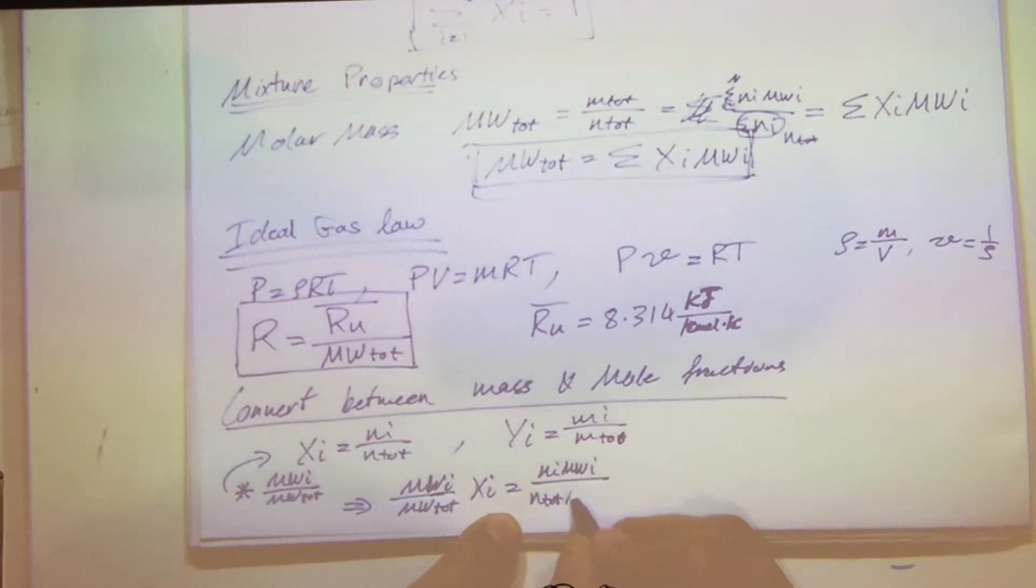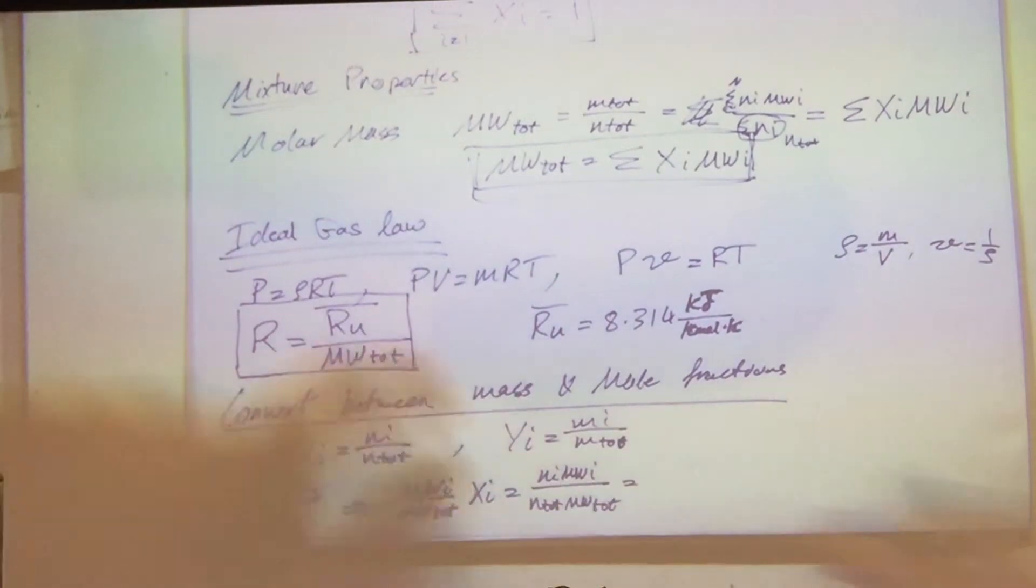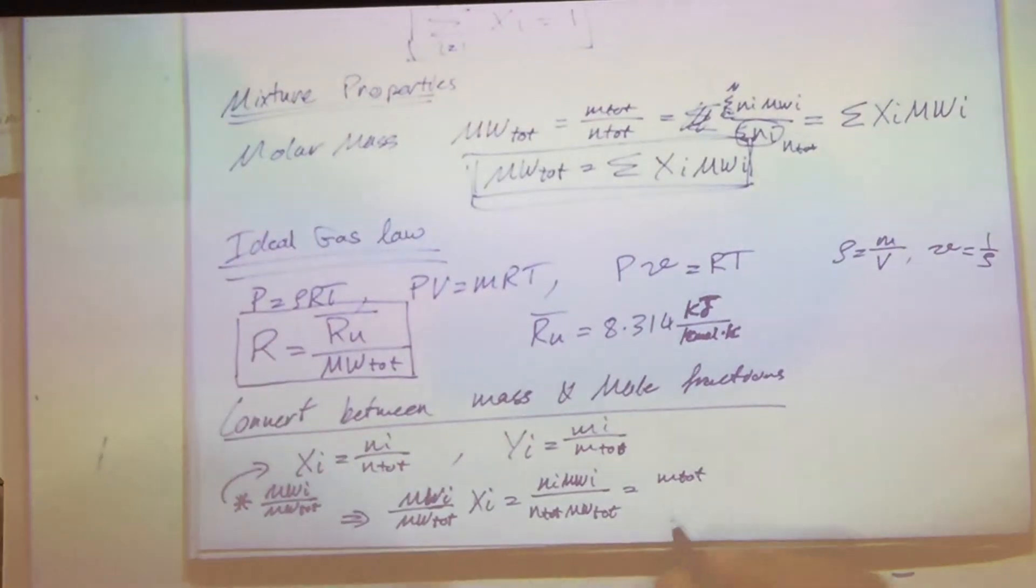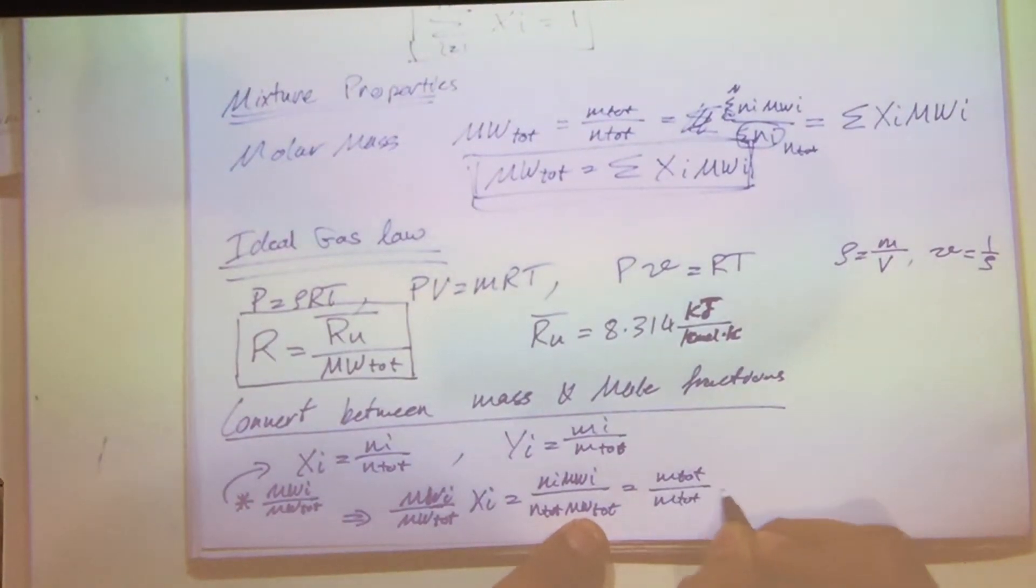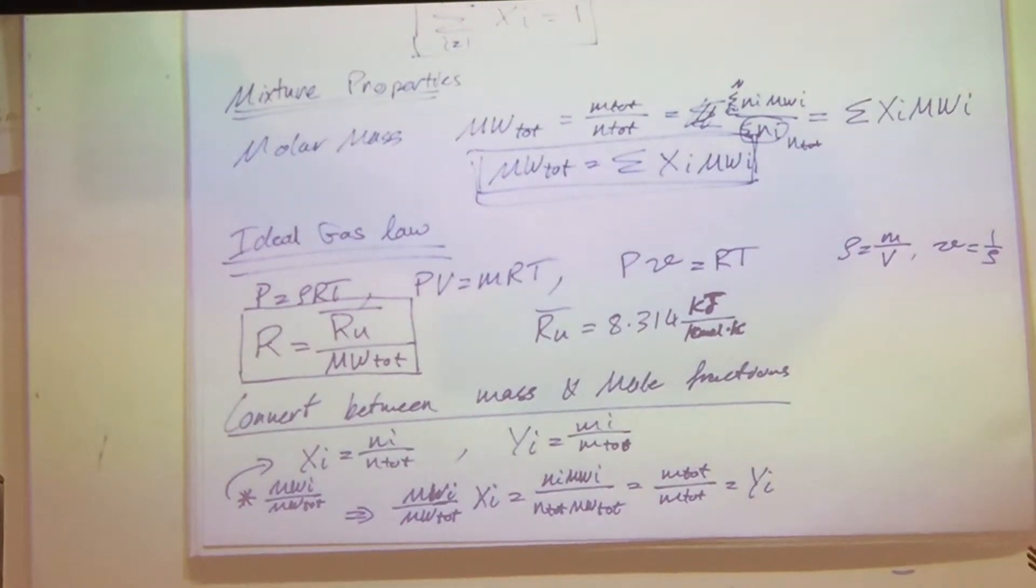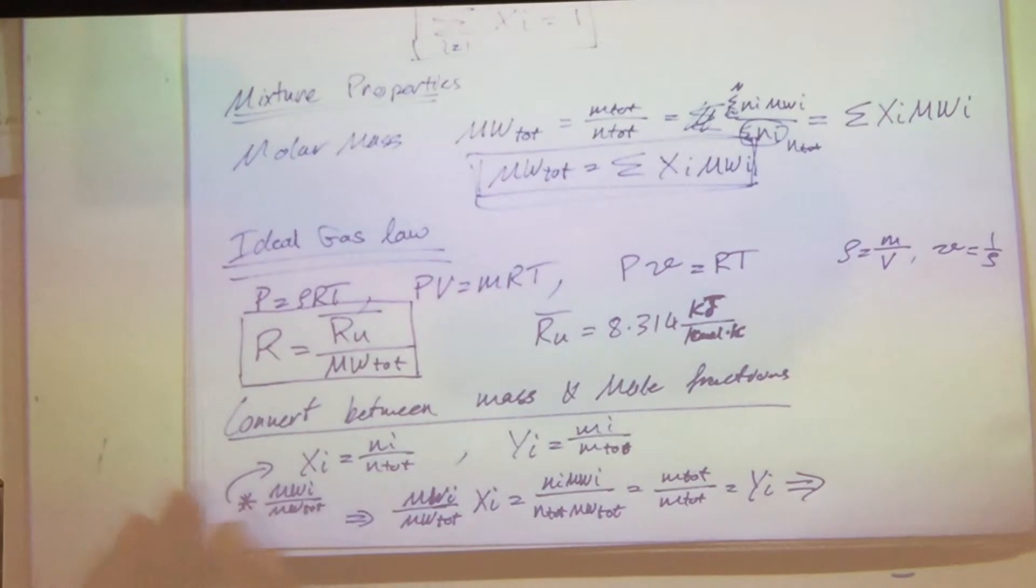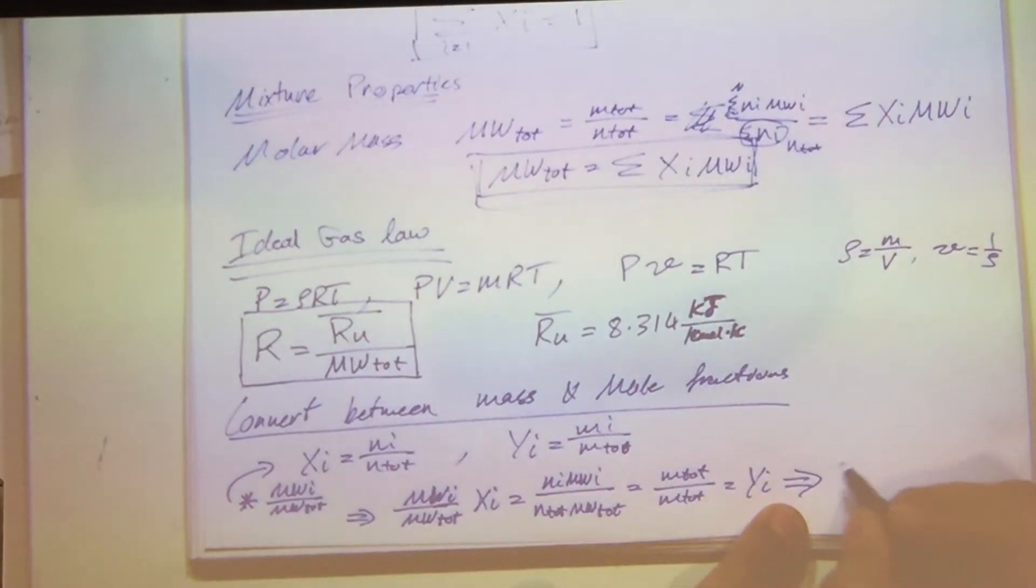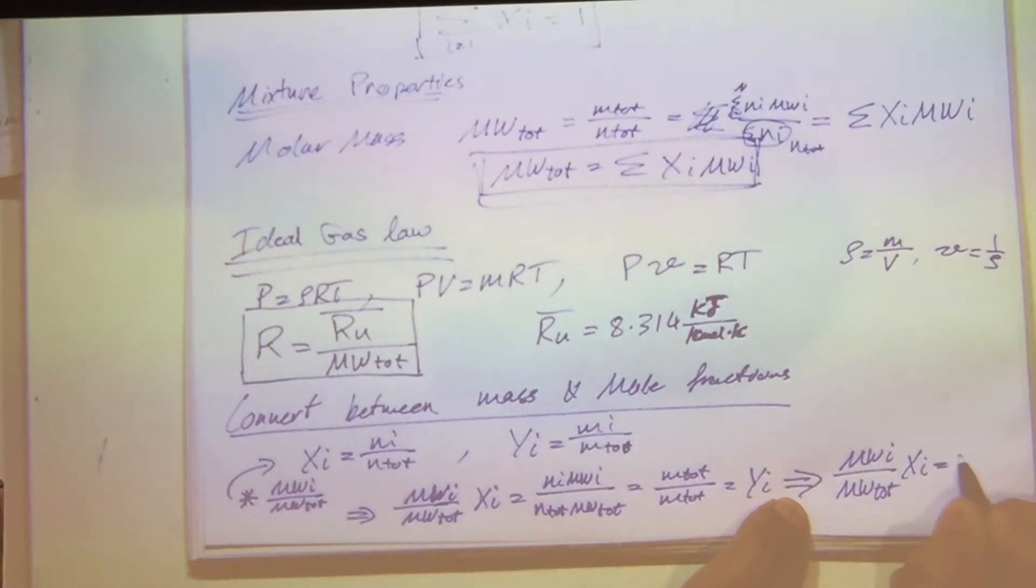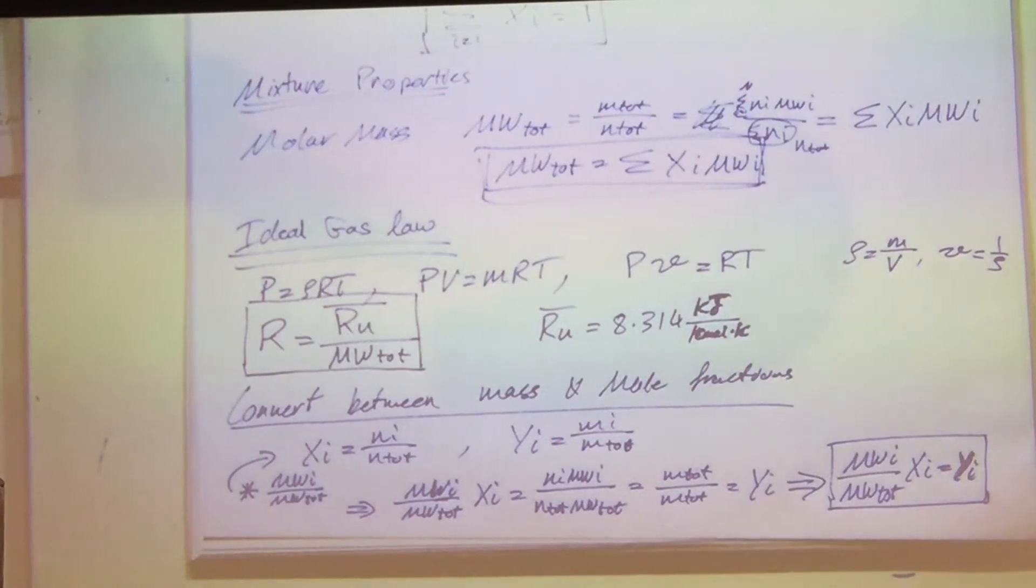N total times molecular weight of the total, and that's going to equal to, if you look at the definition right here, Ni MWi is equal to M total divided by M total, which is going to equal to the mass fraction. So all I did was multiply the individual molecular weight of each species divided by the total. So I can write a general equation and say, so from this, this is how you got to that stage. But the final equation that you're going to be using is MWi over MW total multiplied by Xi is equal to Yi. And that's the final equation that we're going to use.